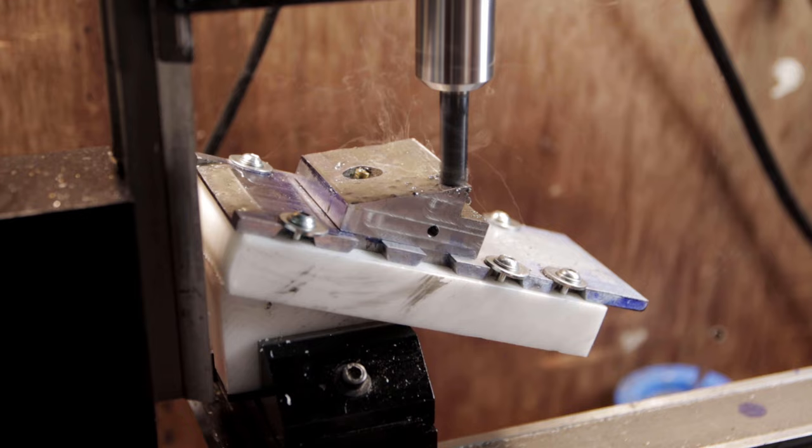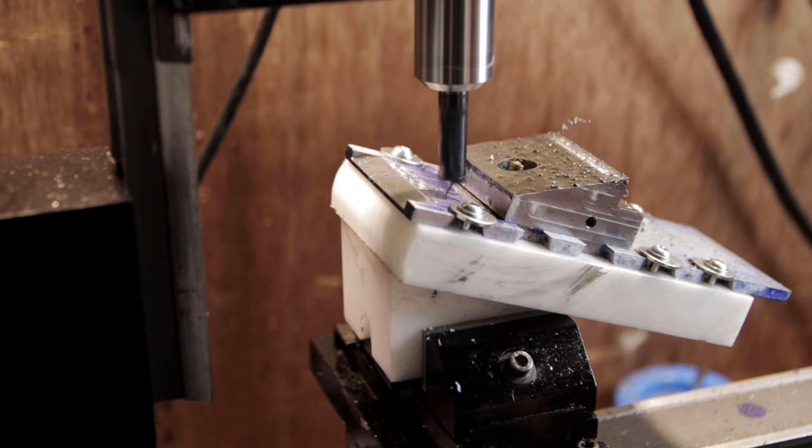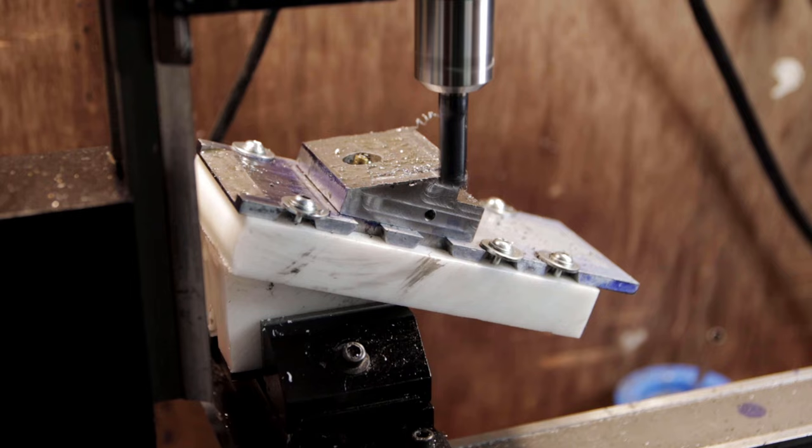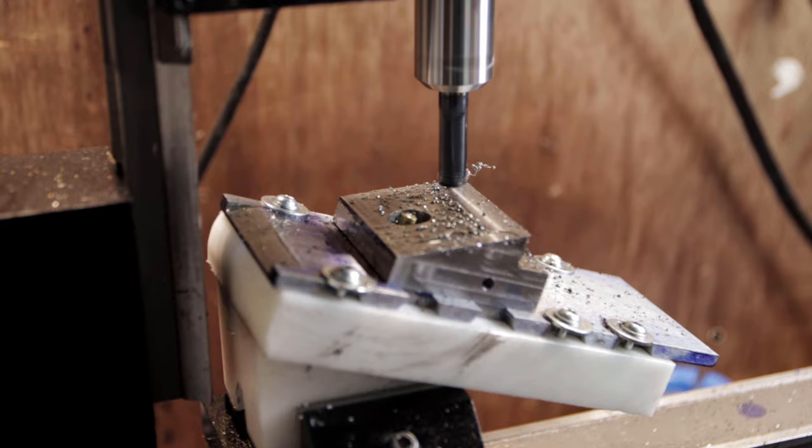So now I'm back over at the lathe and I'm just slowly working those surfaces down so they're all in the same plane. I said lathe because this is actually a lathe with a milling arm attachment. So I don't quite have the same rigidity as you would with a mill, but this works for my purposes.